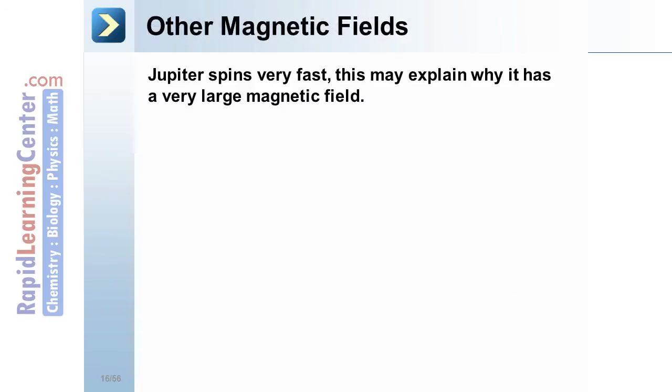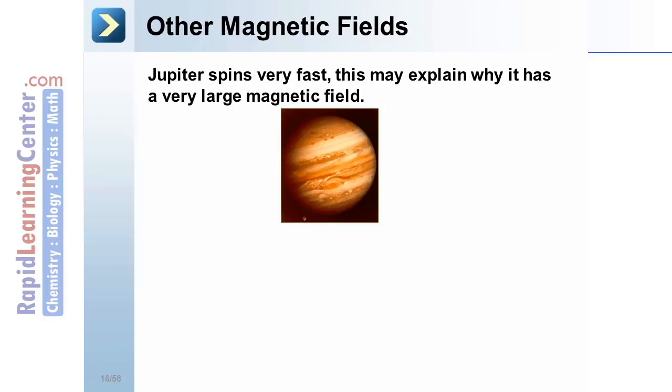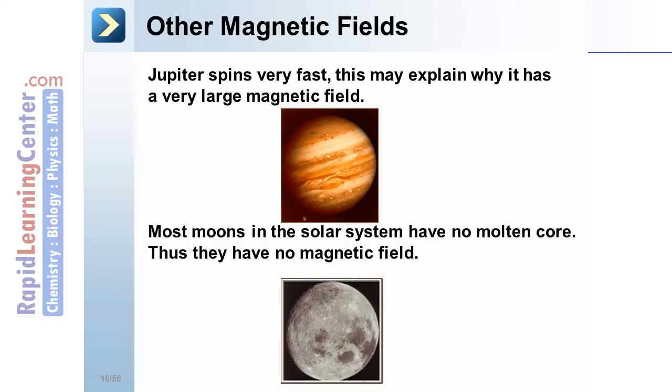Other magnetic fields. The planet Jupiter spins very fast. This rapid movement of its interior may explain why it has a very large, powerful magnetic field. On the other hand, most moons in the solar system have no molten core. Since they're small, they have cooled off. Thus, they have no magnetic field.